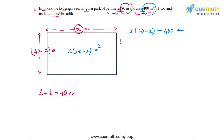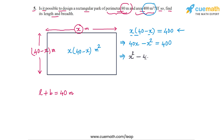Let's first expand the product. x times 40 is 40x, and x times minus x is minus x square, with 400 on the right side. Taking all terms to one side, we can write this as x square minus 40x plus 400 equals 0. This is a quadratic equation in x, and we have to check whether it has real roots.